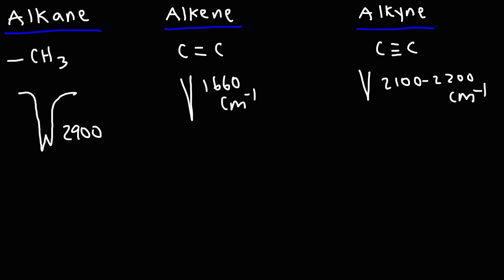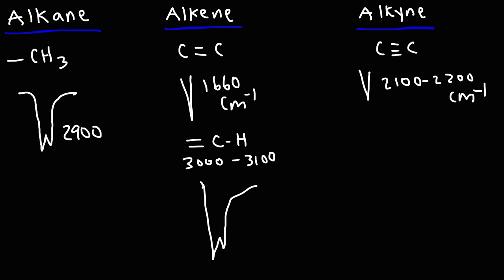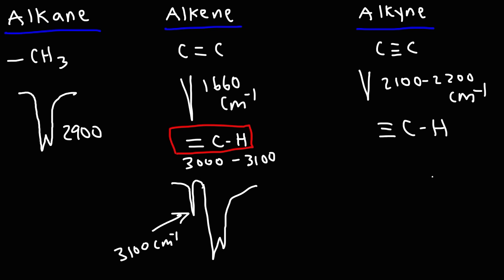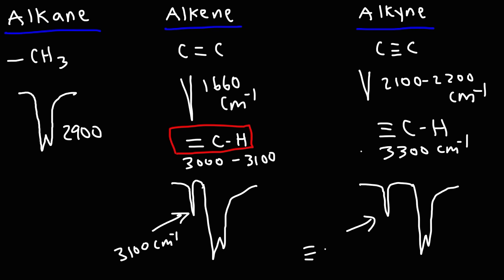The next thing we need to discuss is the CH stretch of an alkene and an alkyne. The sp2 CH stretch of an alkene shows up around 3,000 to 3,100 — so relative to the alkane CH stretch, it's going to be slightly to the left, close to 3,100. If you have a terminal alkyne, the alkyne CH stretch shows up even further to the left, around 3,300.